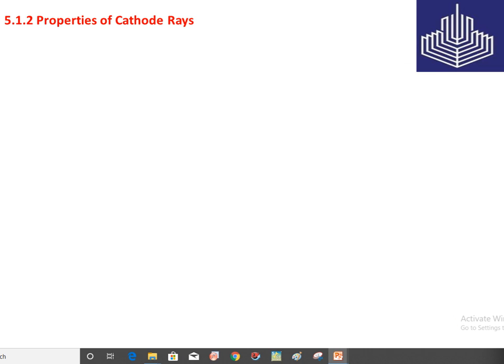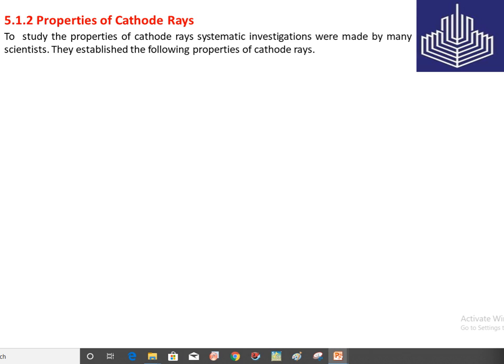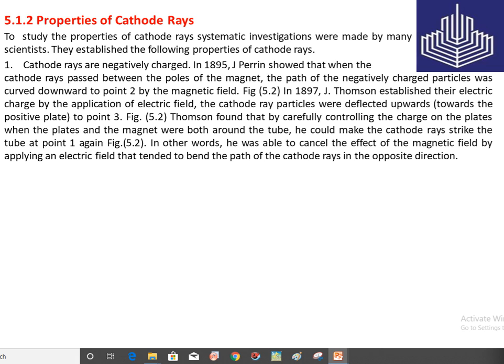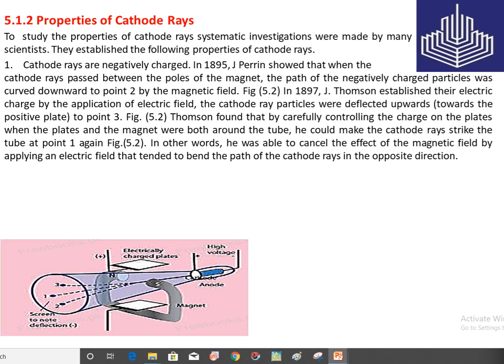Next are the properties of cathode rays. To study these properties, systematic investigations were made by many scientists. Property number one: cathode rays are negatively charged. In 1895, J. Perrin showed that when cathode rays passed between the poles of a magnet, the path of the negatively charged particles was curved downward toward point 2, as shown in figure 5.2.